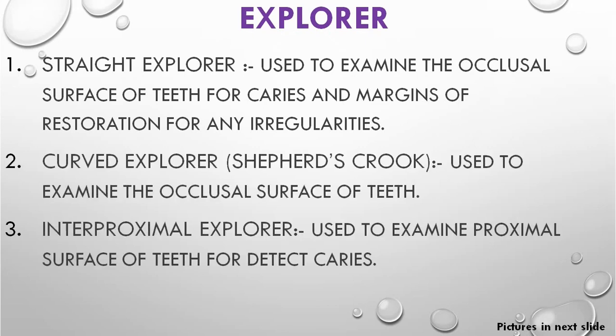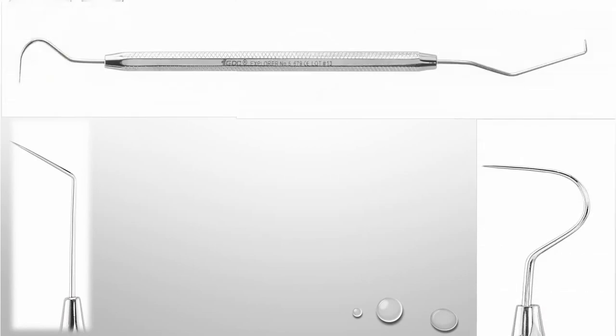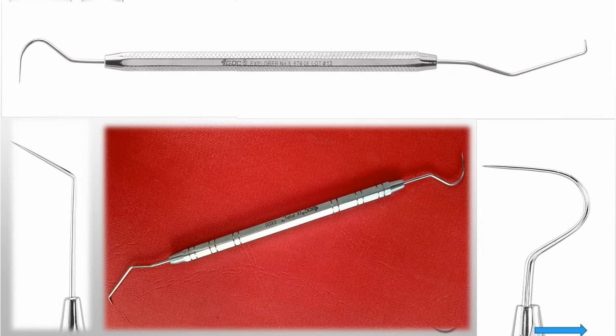The straight explorer is called so to contrast it from the many curved variations. On one end is the curved explorer — shaped like a half moon and called the shepherd's crook — used to examine the occlusal surface of teeth. The interproximal explorer is useful in examining the proximal surfaces, that is the mesial and distal surfaces, and is used for detecting caries. It is called the back action or Briault explorer.